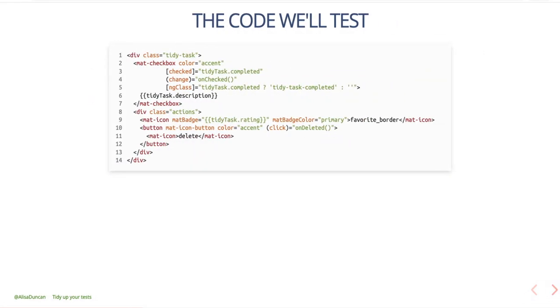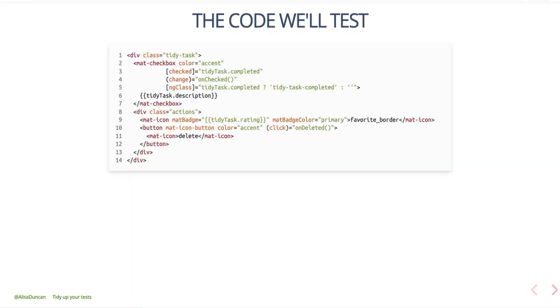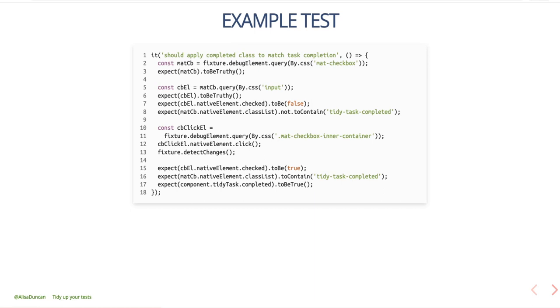For context, the code that we'll look at uses Angular Material. If you haven't used Angular Material before, note that all components have a mat prefix — so for a checkbox we have a mat-checkbox. In our case, we're looking at the ngClass attribute directive where we're adding the CSS class tidyTaskCompleted if the task is completed. In our example test without harnesses, I'm skipping the TestBed setup and diving straight into the test. What we're trying to do is make sure that the CSS class tidyTaskCompleted matches up with whether the checkbox is checked.